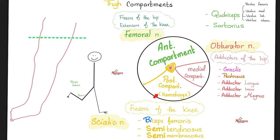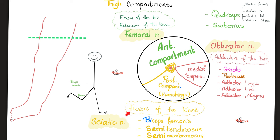Then you have the posterior compartment. What are the muscles? Biceps femoris, semitendinosus, semimembranosus. You were driving down the highway, looked at the rear-view mirror, and saw two semi-trucks — semitendinosus and semimembranosus.